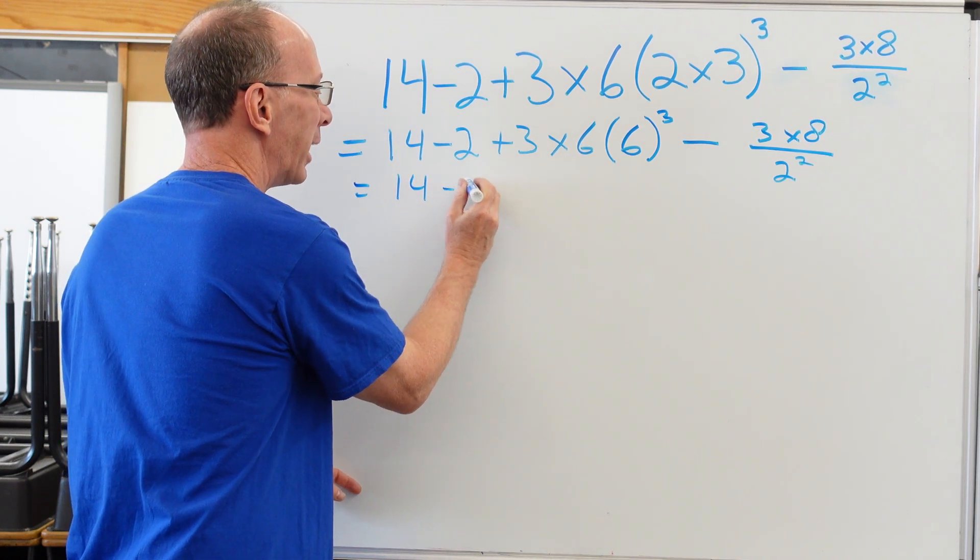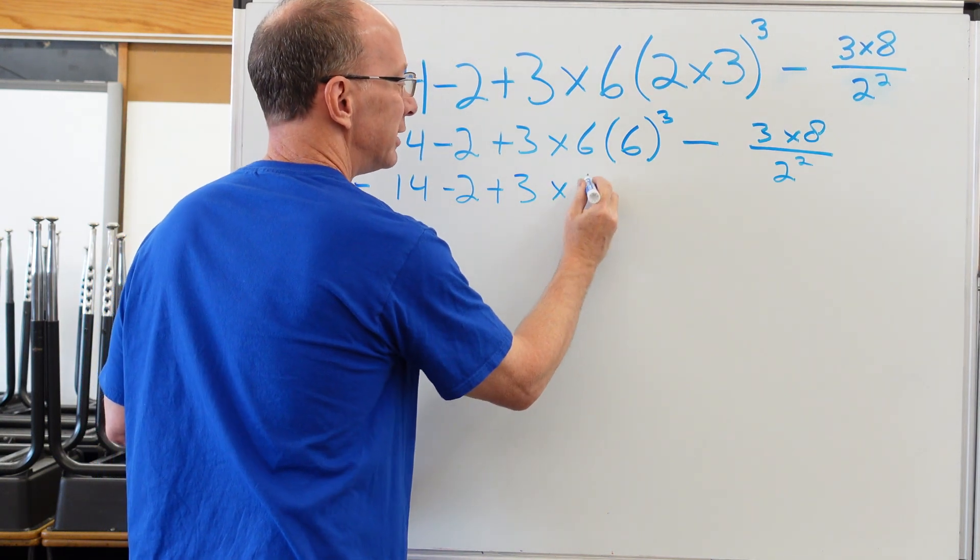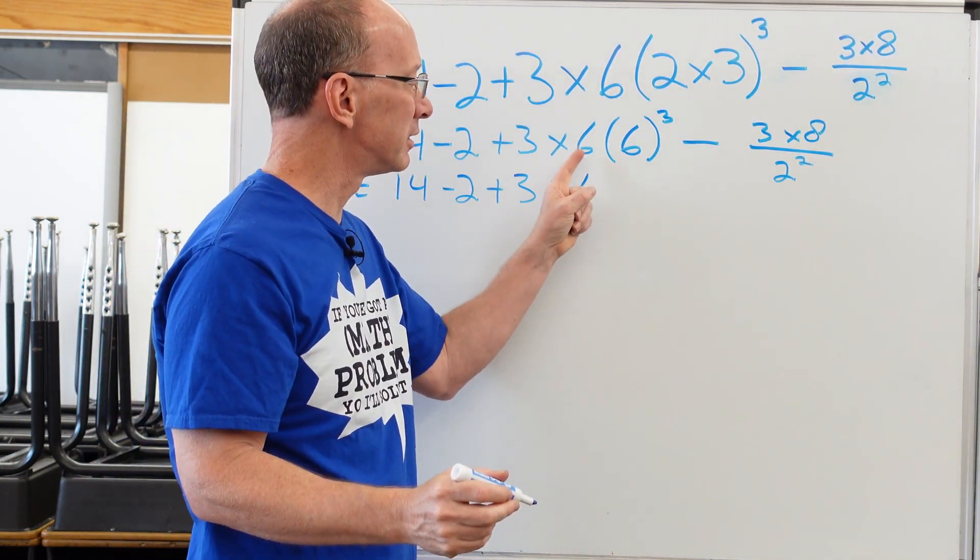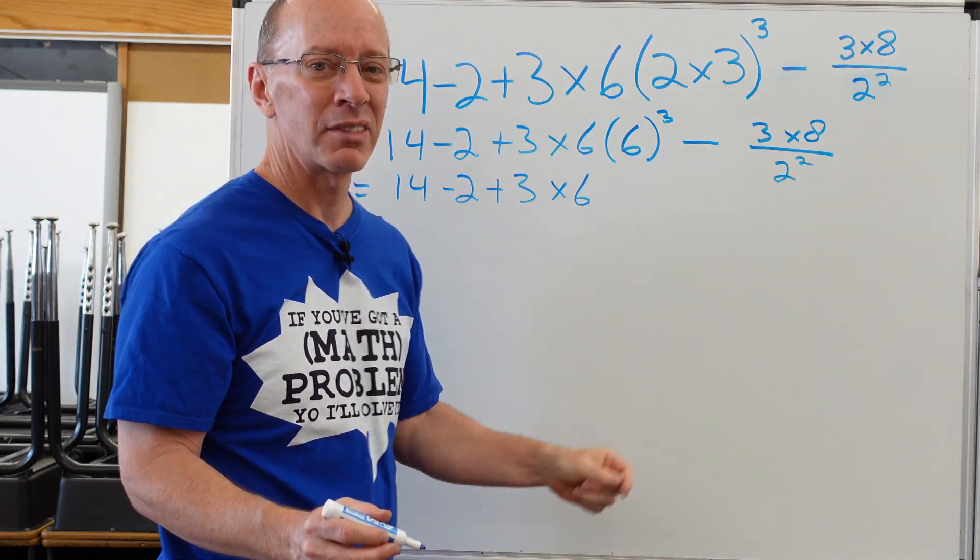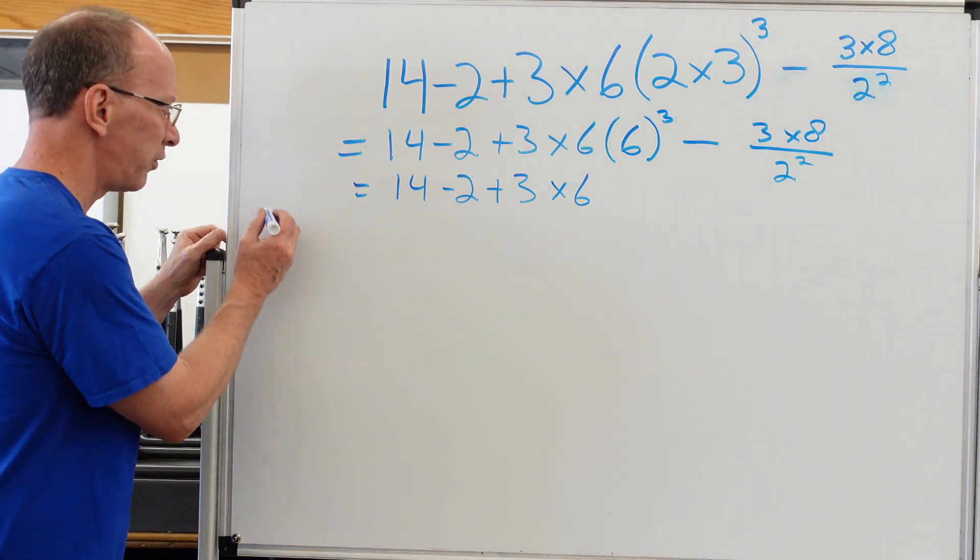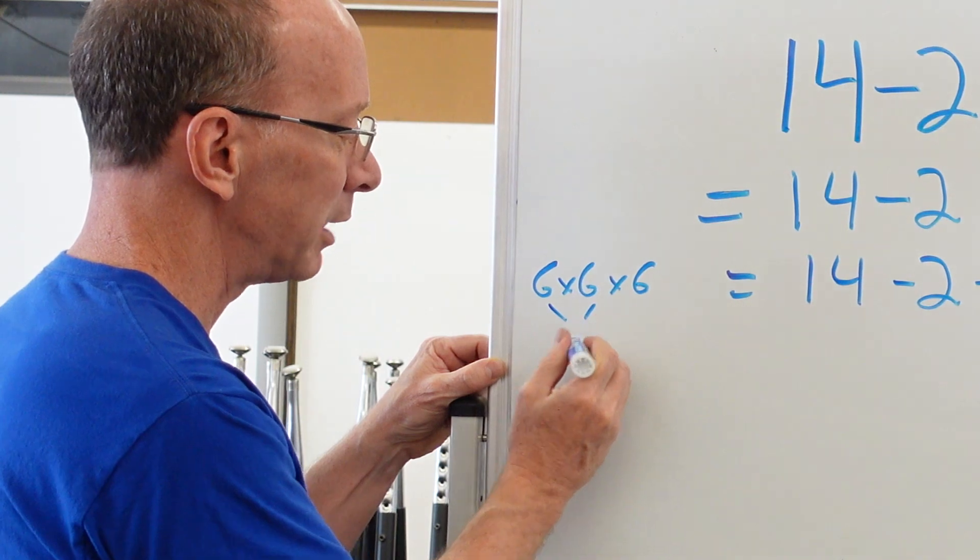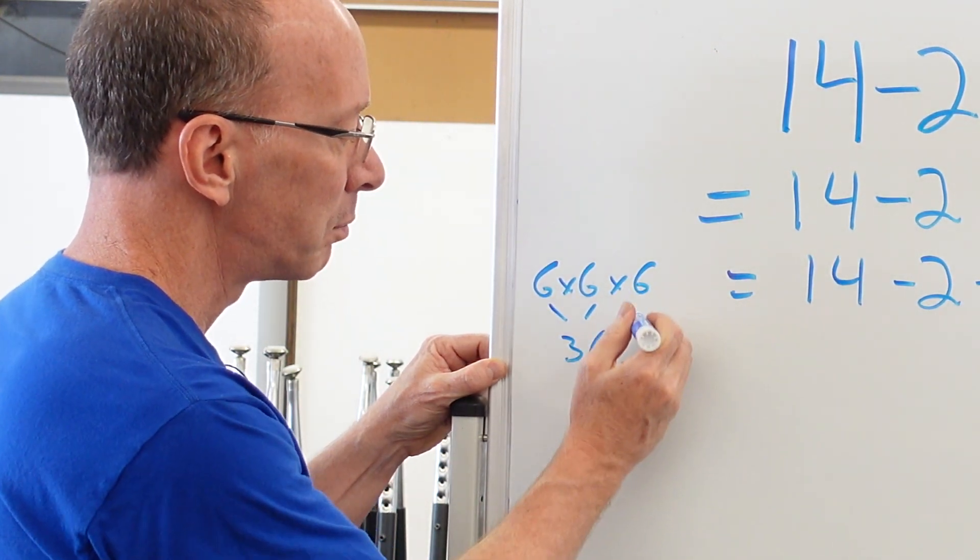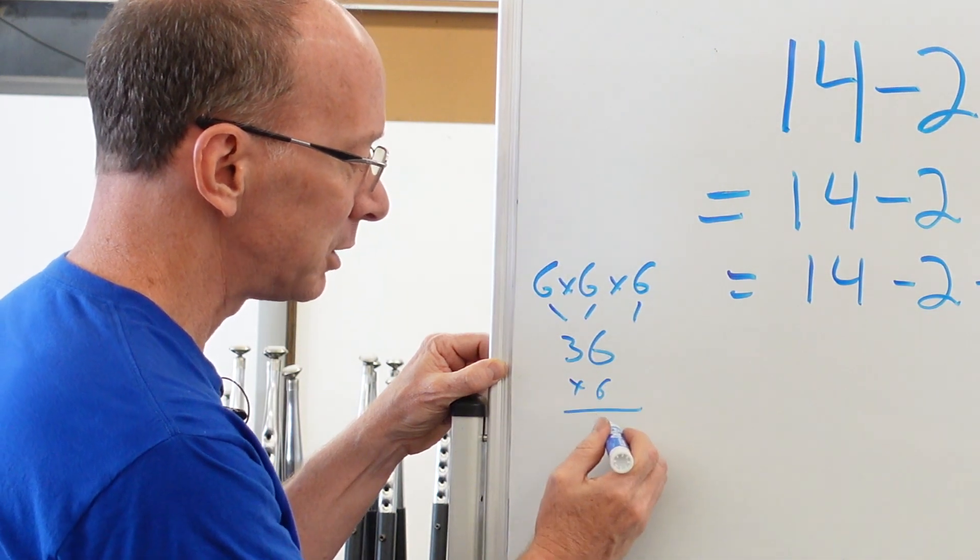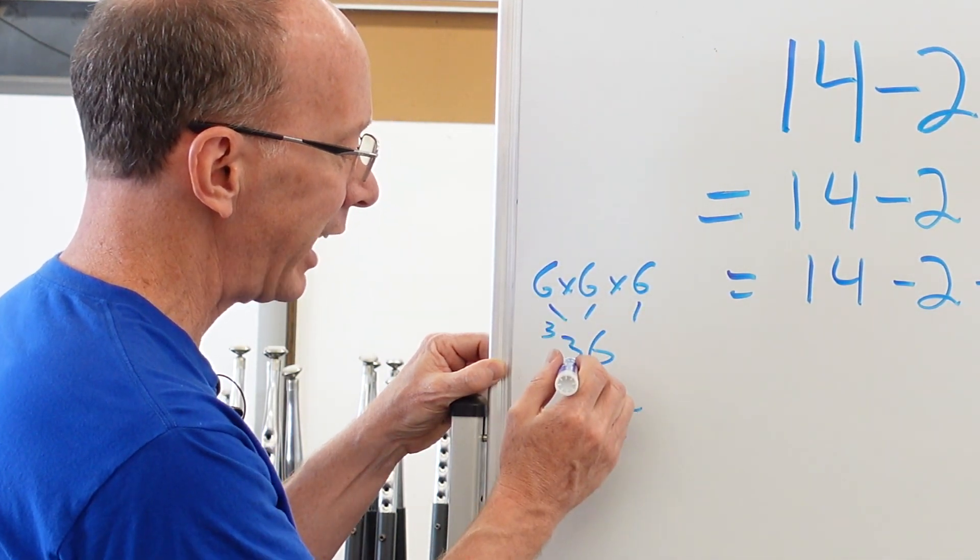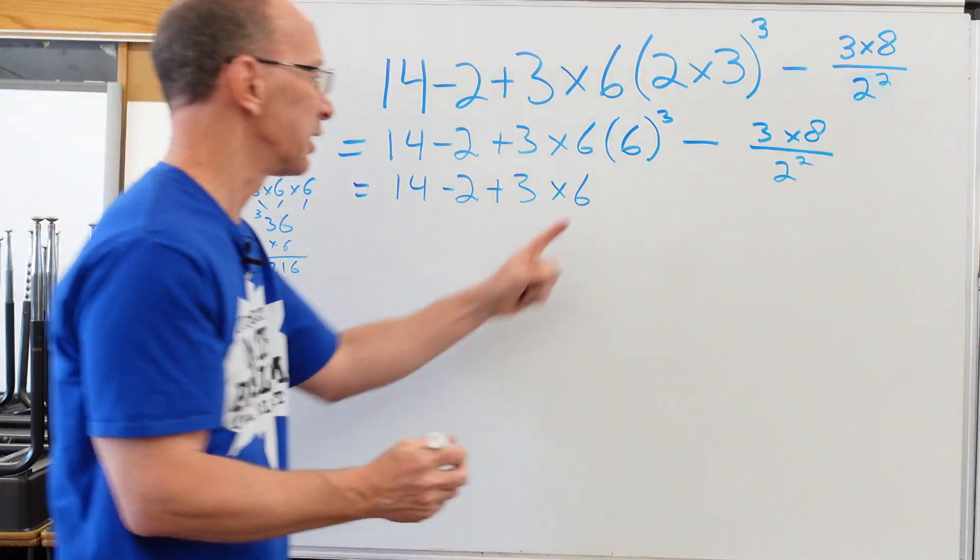14 minus two plus three times six, and then this is six times six to the third power. What is six to the third power? I got to go over and do a little calculation, a little figuring right here, because that will be six times six times six. So six times six is 36 times this other six right here. So I need to multiply that. Six times six is 36. Carry the three. Six times three is 18, 19, 20, 21. So that is a gigantic number.